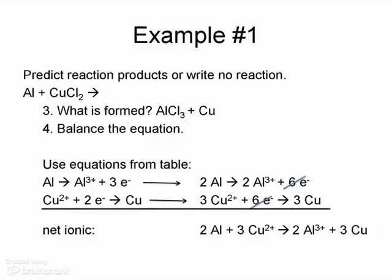Our six electrons will cancel. And our balanced net ionic equation will be two aluminums plus three copper 2+. We'll make two aluminum 3+ and three coppers. The chlorides don't actually do anything in this reaction except help make a neutral compound. So we could add those back in if we wanted to, but they're not absolutely necessary.